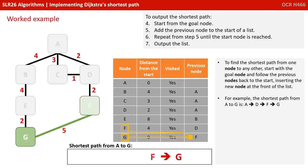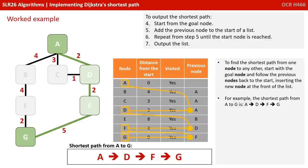To find the shortest path from one node to any other, we start with the goal node and follow the previous nodes back to the start, inserting each new node at the front of the list. For example, the shortest path from A to G is A, D, F, G.